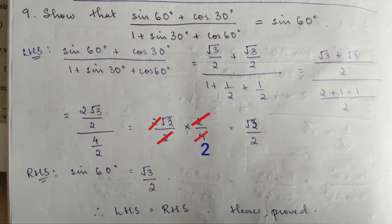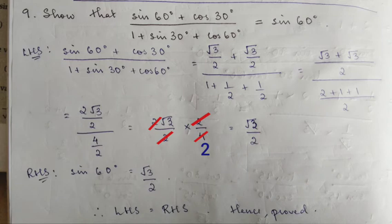We can cancel both — root 3 by 2. Right hand side: sin60 degrees. Using the sin60 formula. Therefore LHS is equal to RHS, and hence proved.